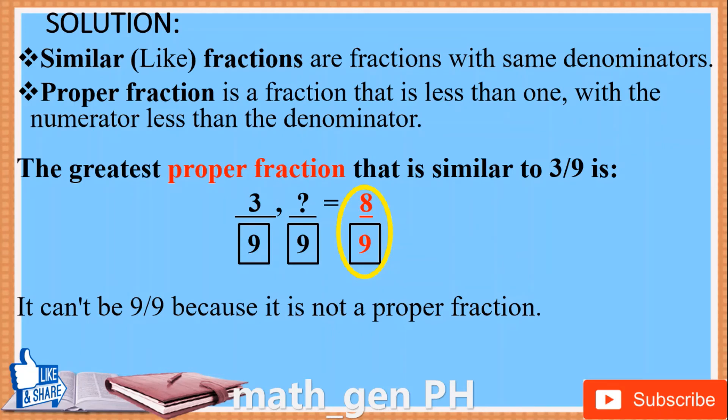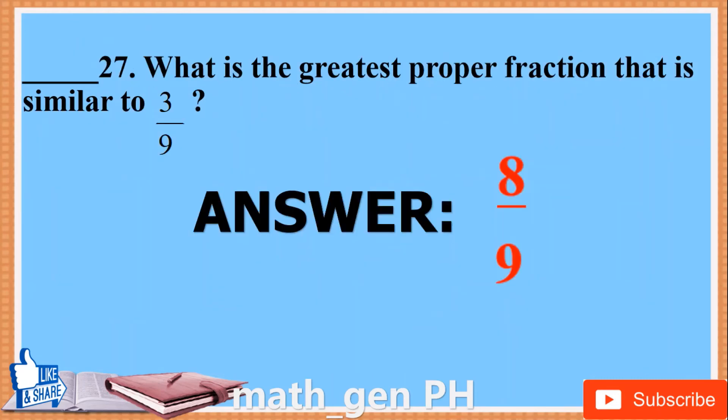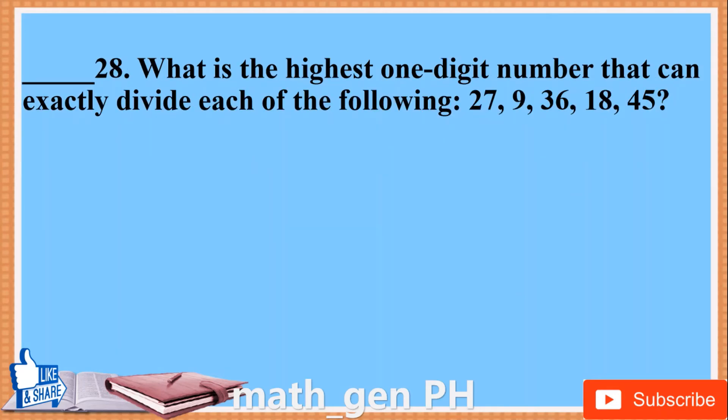Solution. Similar or like fractions are fractions with the same denominators. A proper fraction is a fraction less than 1, with the numerator less than the denominator. The greatest proper fraction similar to 3/9 is 8/9. It can't be 9/9 because that is not a proper fraction. Answer: 8/9.